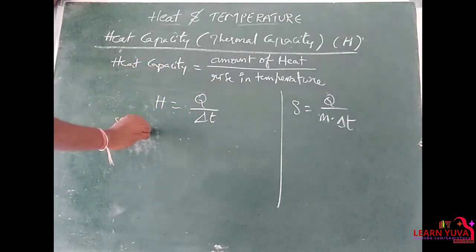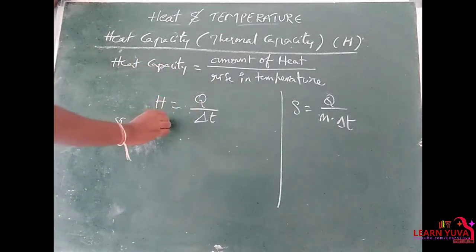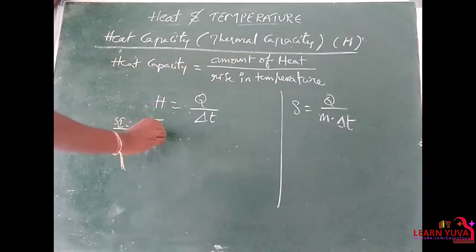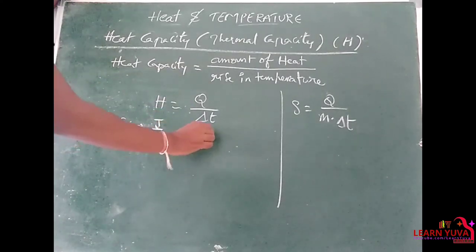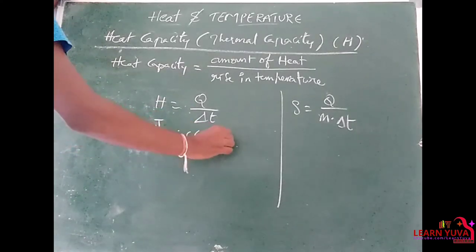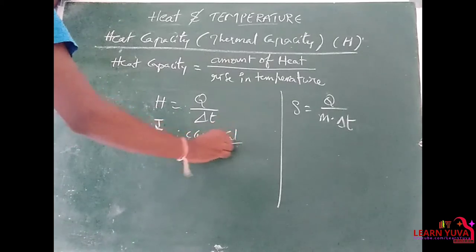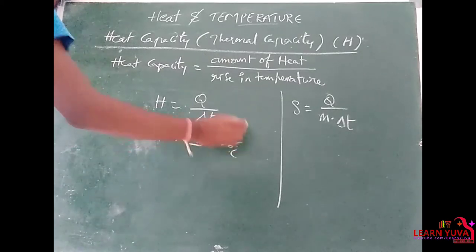The SI unit for heat capacity is joule per Kelvin, whereas the CGS unit is calorie per degree Celsius.